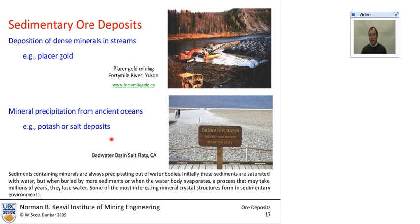You can also have ancient oceans that are dried up. This is one example of a salt flat in California, which is actually used to mine salt from this. It's also a tourist location, but there's lots of ancient oceans that have been covered over and formed what are now potash deposits in central Canada.